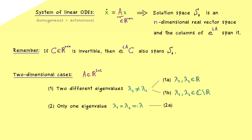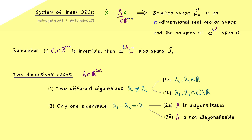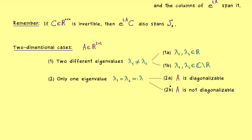In the second case we have a different subdivision: we can distinguish whether the matrix is still diagonalizable. In the first case with two distinct eigenvalues, A is always diagonalizable because we have enough eigenvectors. However, when there is only one eigenvalue, it can happen that the eigenspace is only one-dimensional, and then the matrix A is not diagonalizable. So these are the four possibilities for our matrix A.